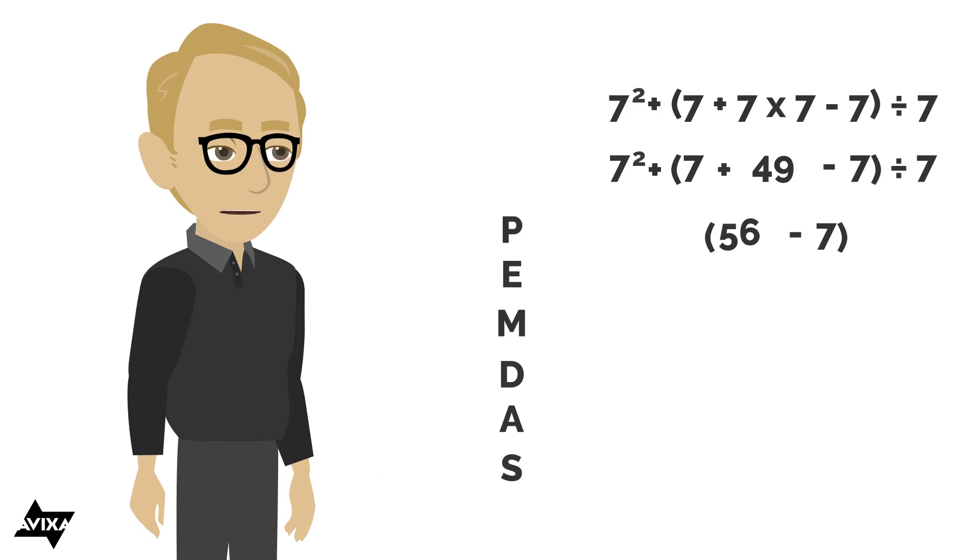still operating within the parentheses, divided by seven. So still within the parentheses here, 56 minus seven gives me 49,